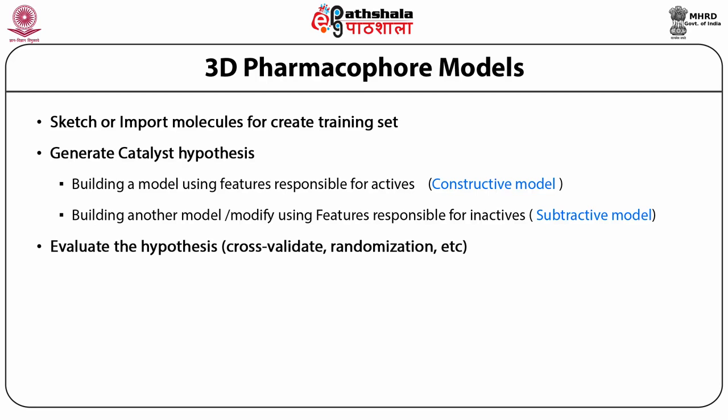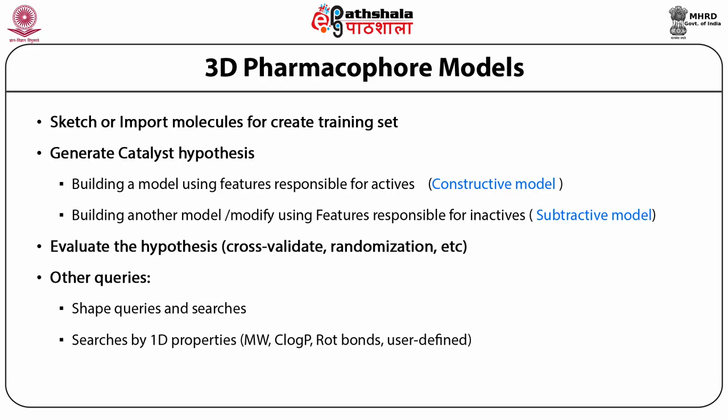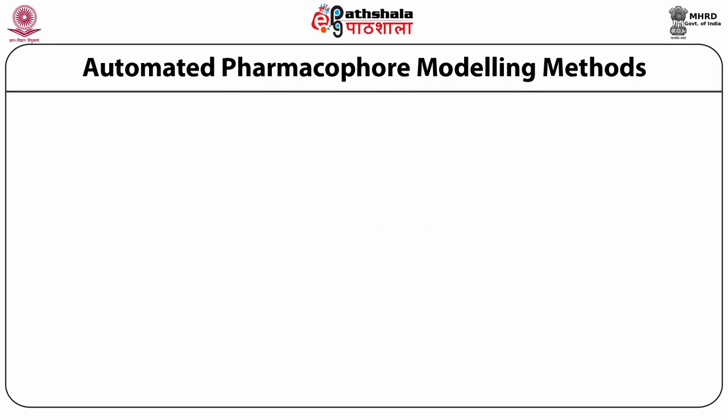One must evaluate the hypothesis by cross-validation and randomization, also by fitting the pharmacophore and finding the best fit with the most active and worst fitting with the least active compounds, then ranking the pharmacophore. After that, shape queries using the most active compounds can filter pharmacophores. One can also impose a 1D property search like molecular weight, cLogP, number of rotatable bonds, and other user-defined properties. Automated pharmacophore modeling is done by two categories of programs available in catalyst, as well as other listed software.